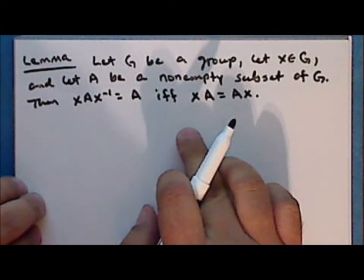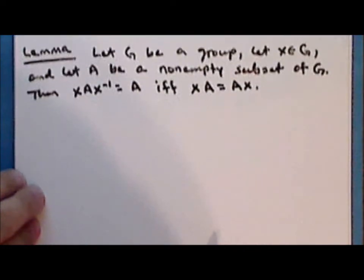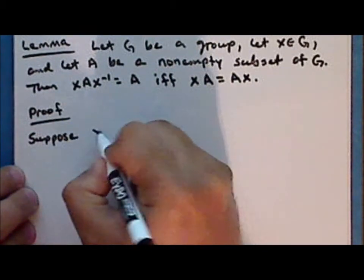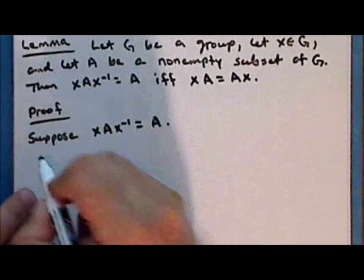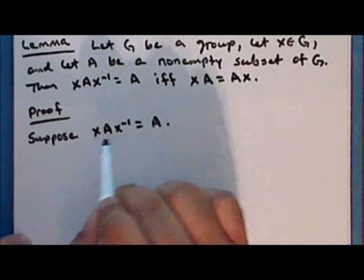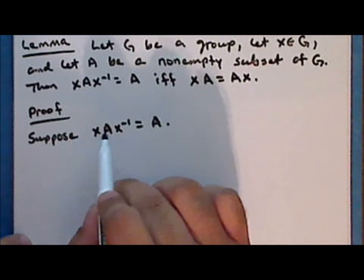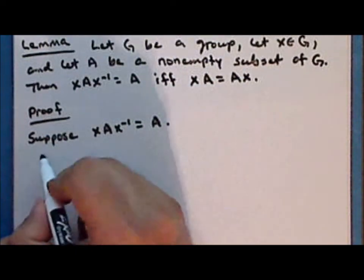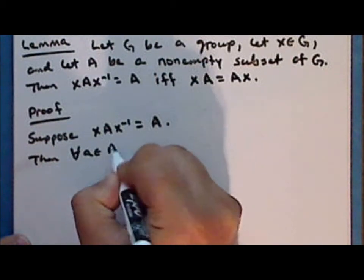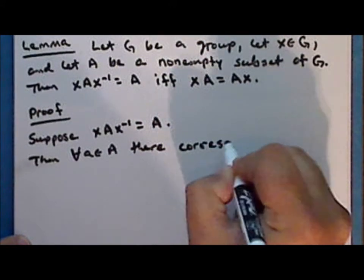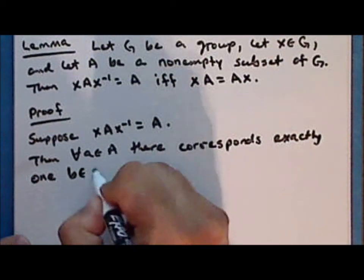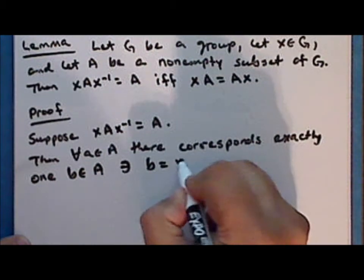I'm using the language and notation of a multiplicative group, but this is true of an additive group as well. Proof: suppose that the set of conjugations of A equals A. Then every element in the set of conjugations is also an element in A, and conversely every element in A can be expressed as X times an element in A times X inverse. So for every element a in A there corresponds exactly one element b in A such that b equals X times a times X inverse.